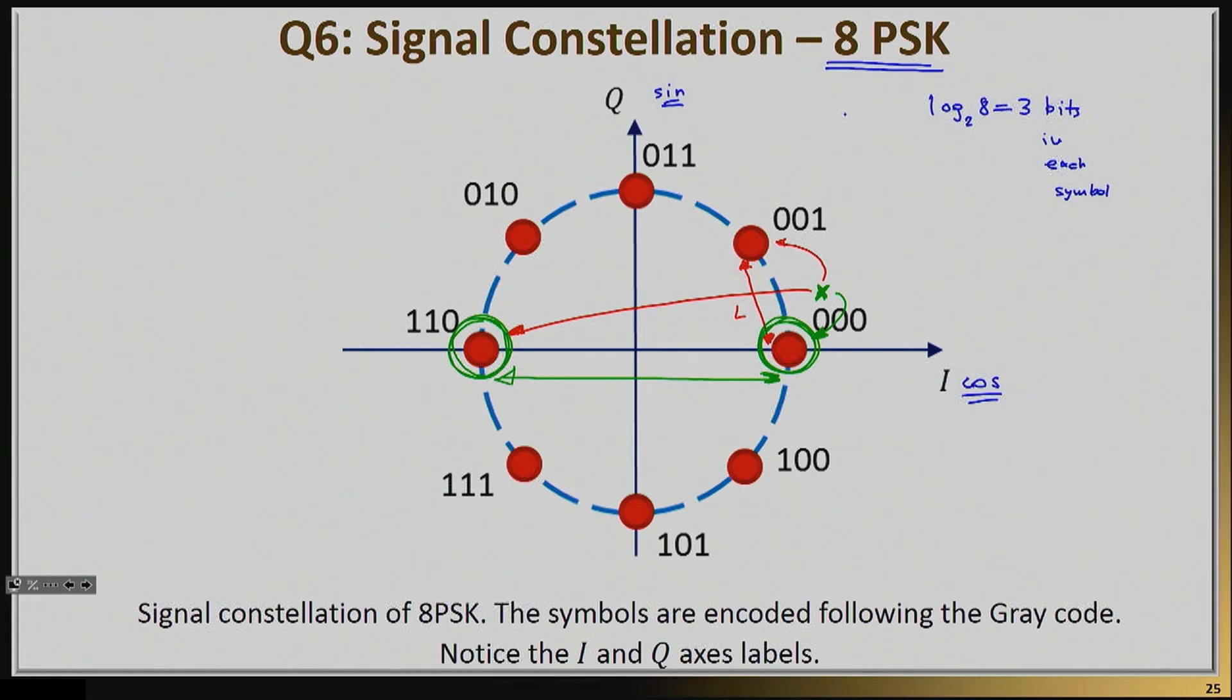The last thing I want to mention about this diagram here is this thing called gray code. You may have heard of gray code before, and we're not going to spend time in this course, but just so you know what it is, it's basically a way to assign bits to symbols.